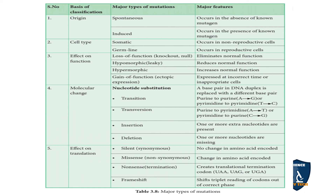Cell type classification: if mutation occurs in the body cells, that type is called somatic mutation — it occurs in non-reproductive cells. Germ line mutation occurs in gametes, that is the reproductive cells.